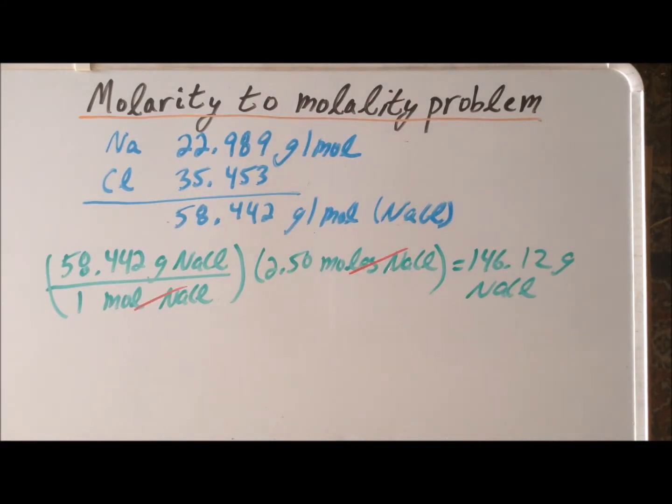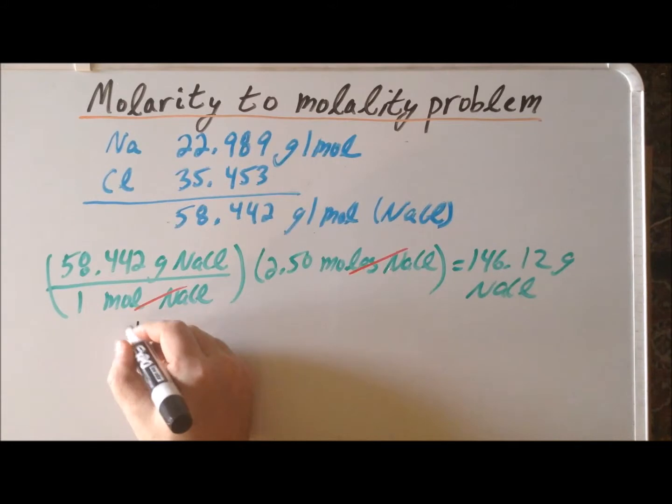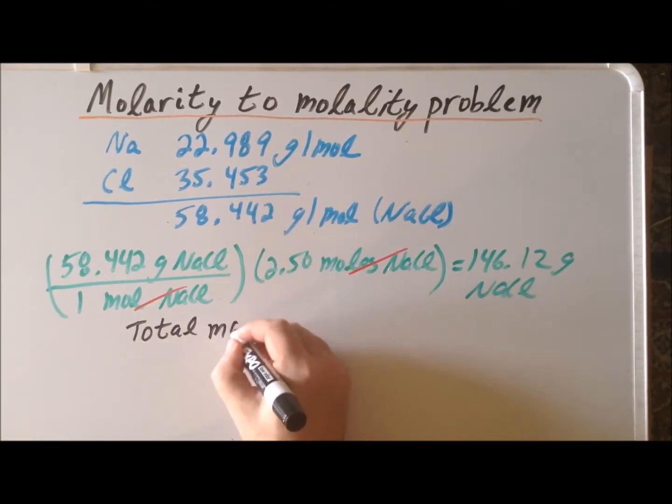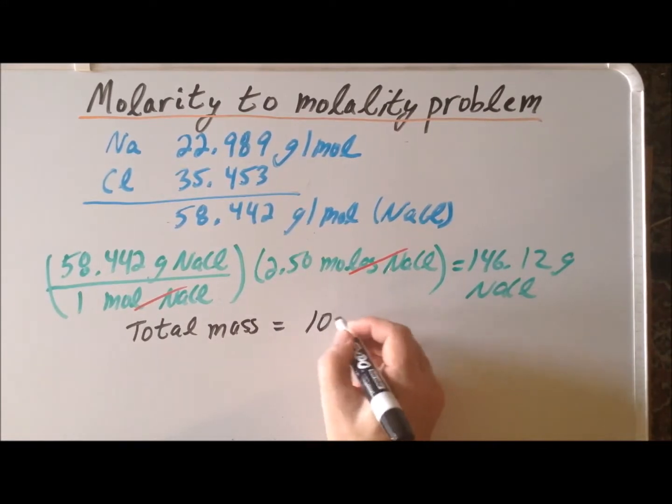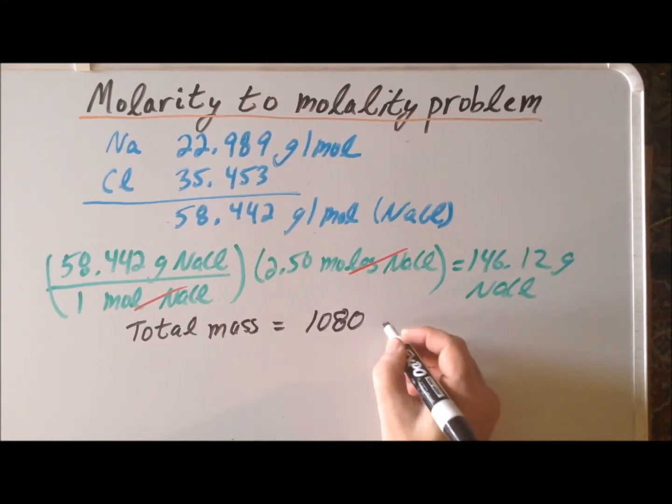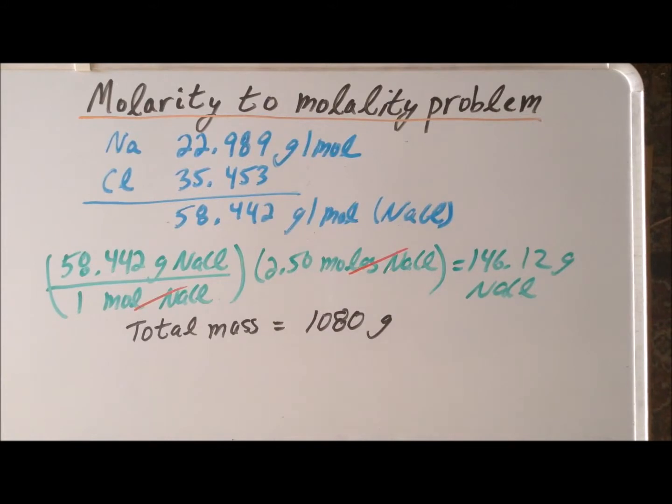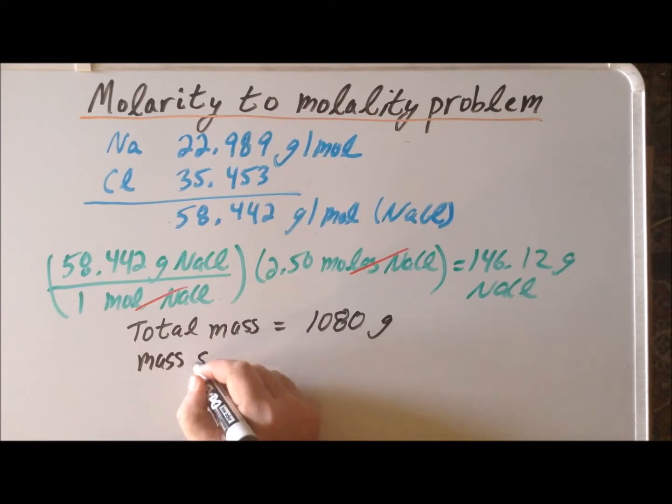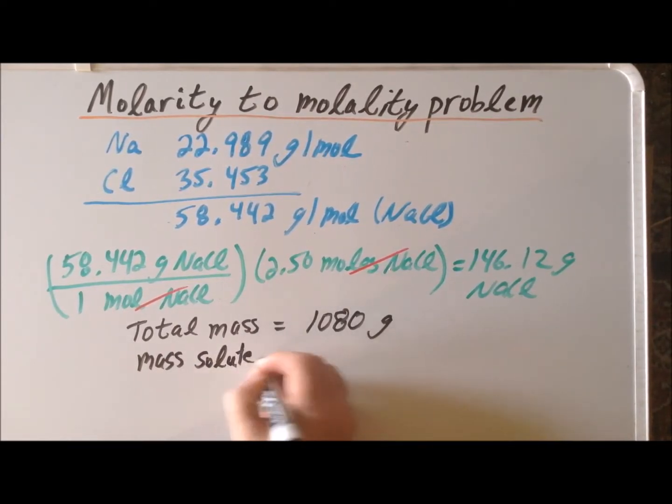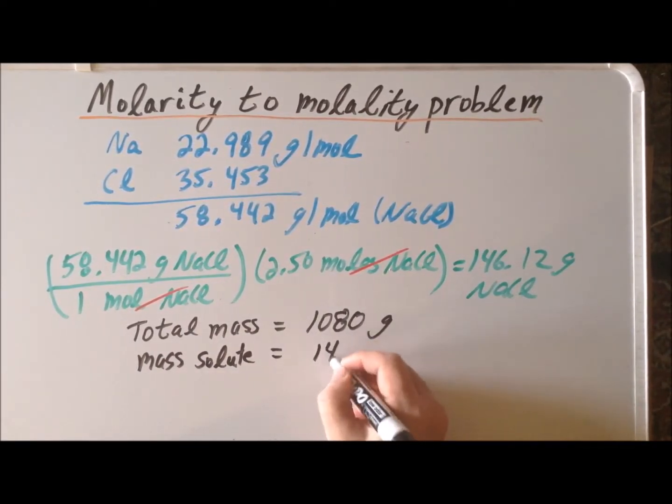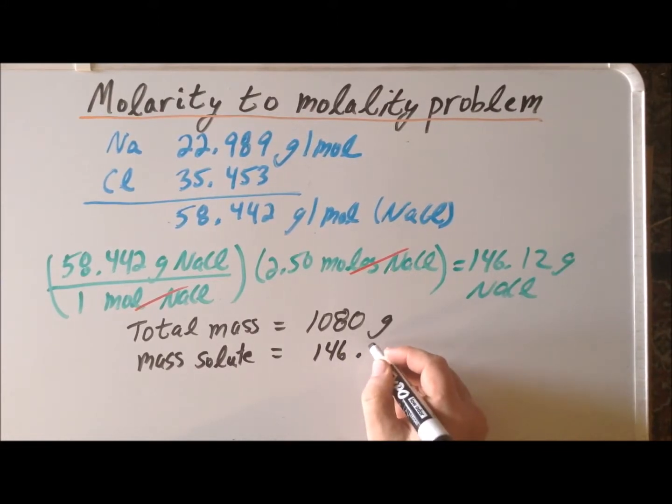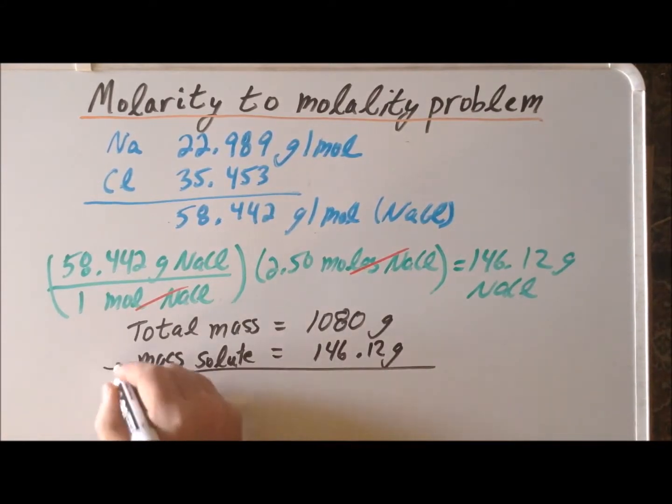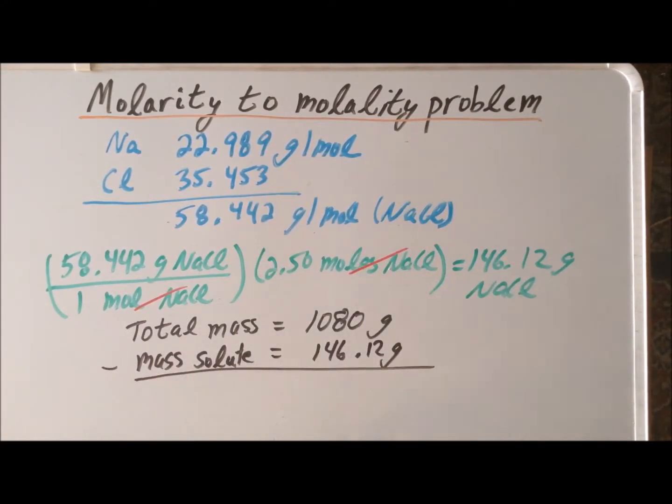Now we're going to use the fact that we know the mass of the total solution (the total mass) is equal to 1,080 grams. We also know the mass of the solute, which is 146.12 grams. If we subtract these values, we're going to get the mass of just the solvent.